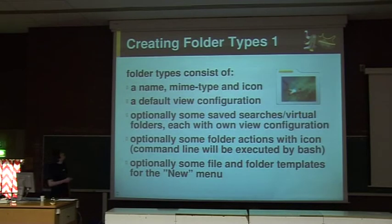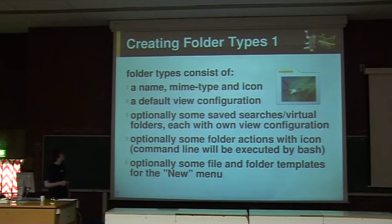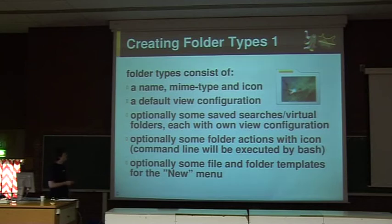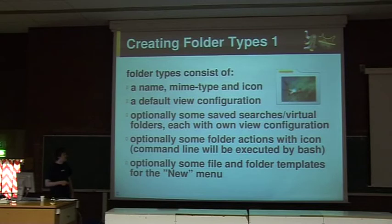Next topic: creating folder types. I added the concept of folder types into MetaSepia. A folder type consists of a name, a mime type, and an icon. As a default view configuration — for example thumbnails, lists, or whatever. Then optionally some saved searches, which are also called virtual folders, each with their own view configuration. So you can have the top 25 last used documents in a list.